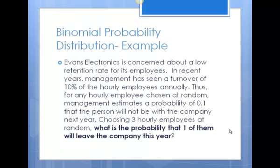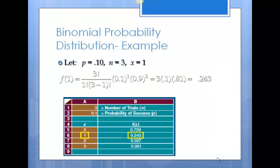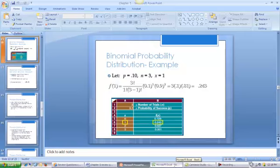Here's an example: Evans Electronics has seen a turnover of 10% of hourly employees annually. For an employee chosen at random, management estimates a 0.1 probability that the person will not be with the company next year. Choosing three hourly employees at random, what is the probability that one of them will leave? We'll skip to a more detailed worked example to show the actual calculation.